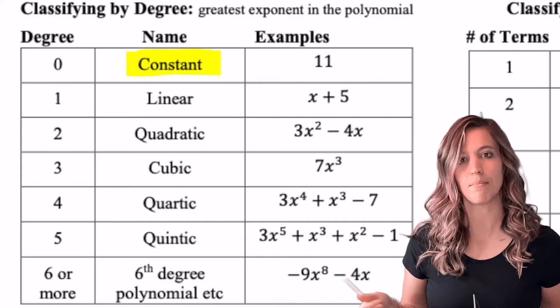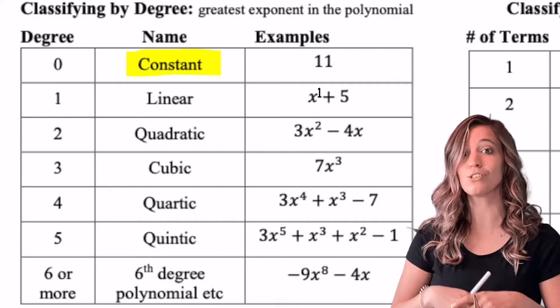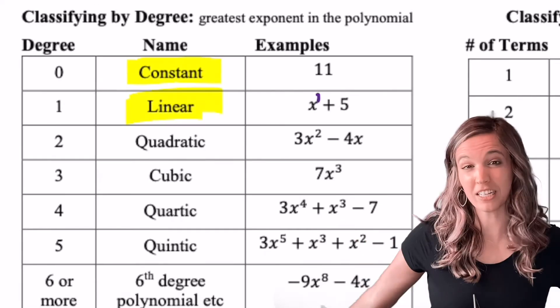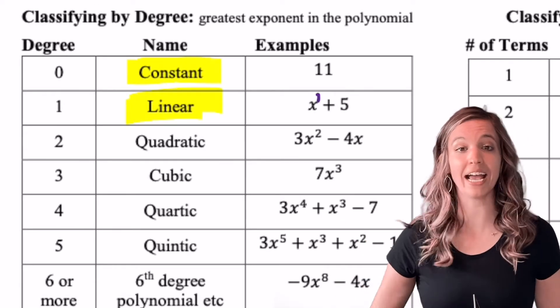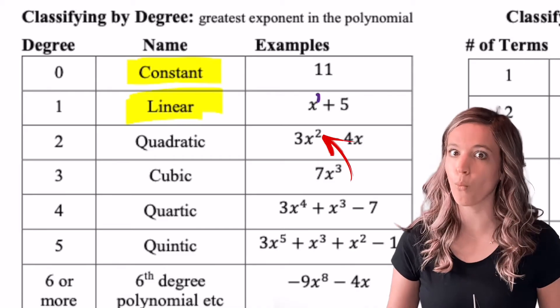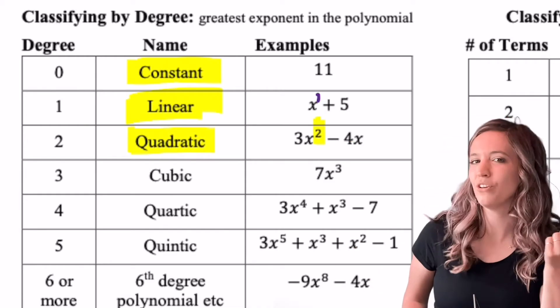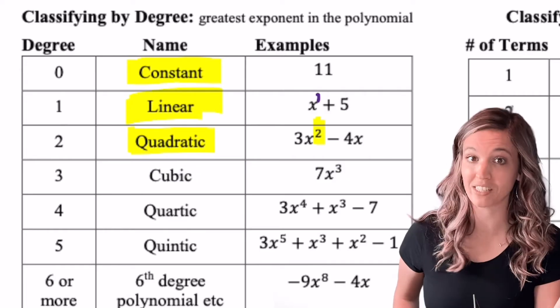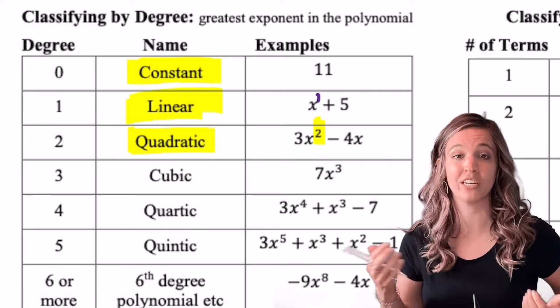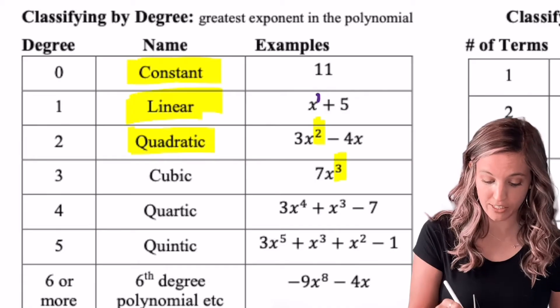We already know the next name. If my highest exponent is 1, it's called linear. If my highest exponent or my degree is 2, so x squared, it's quadratic. We already kind of knew the first three, so let's learn the ones past this. If my highest exponent is 3, so x cubed, it's called a cubic.